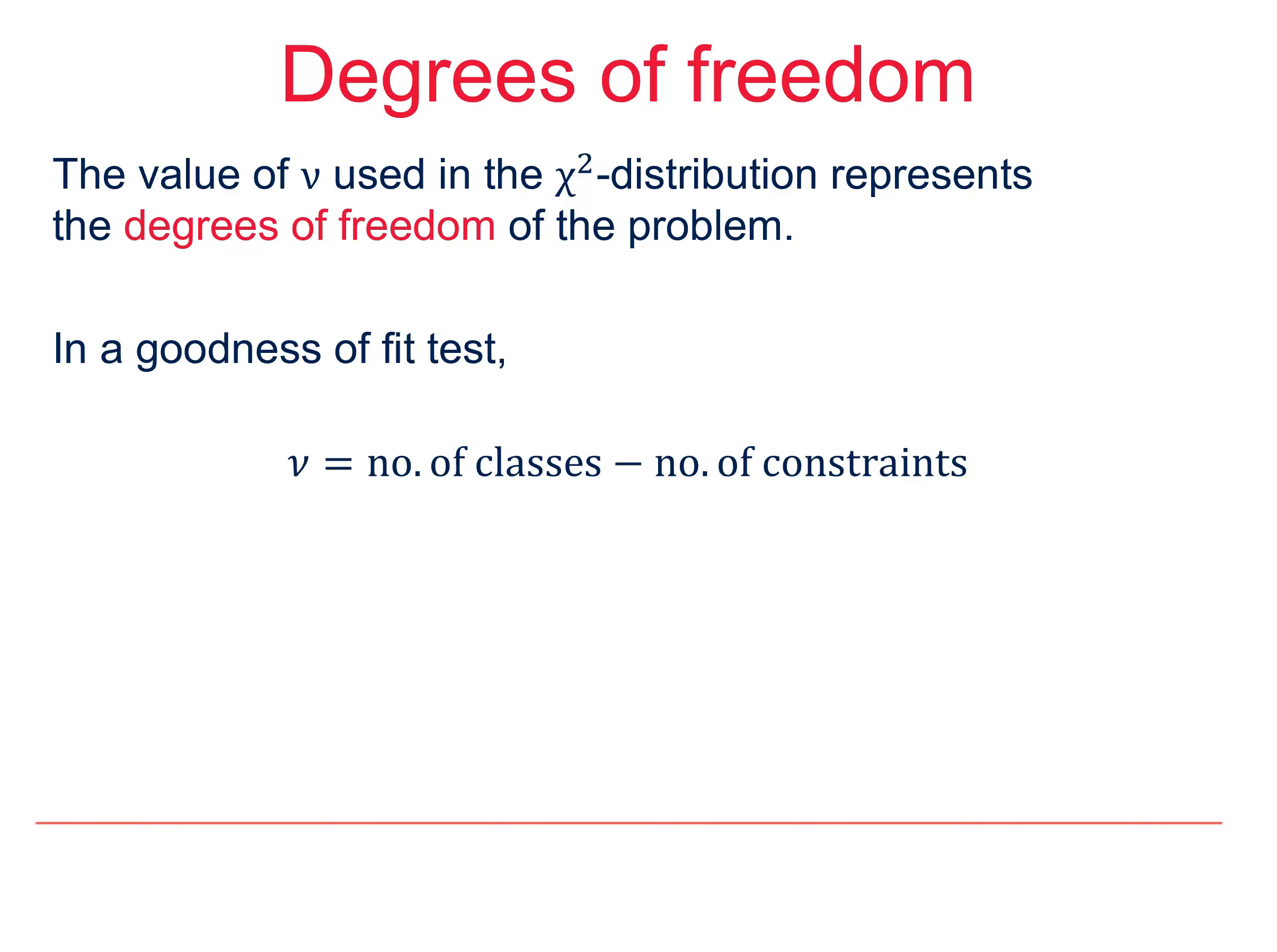Then we work out the number of degrees of freedom. As before, we have just one constraint, the total, so that nu is equal to 3 take away 1, which is 2.